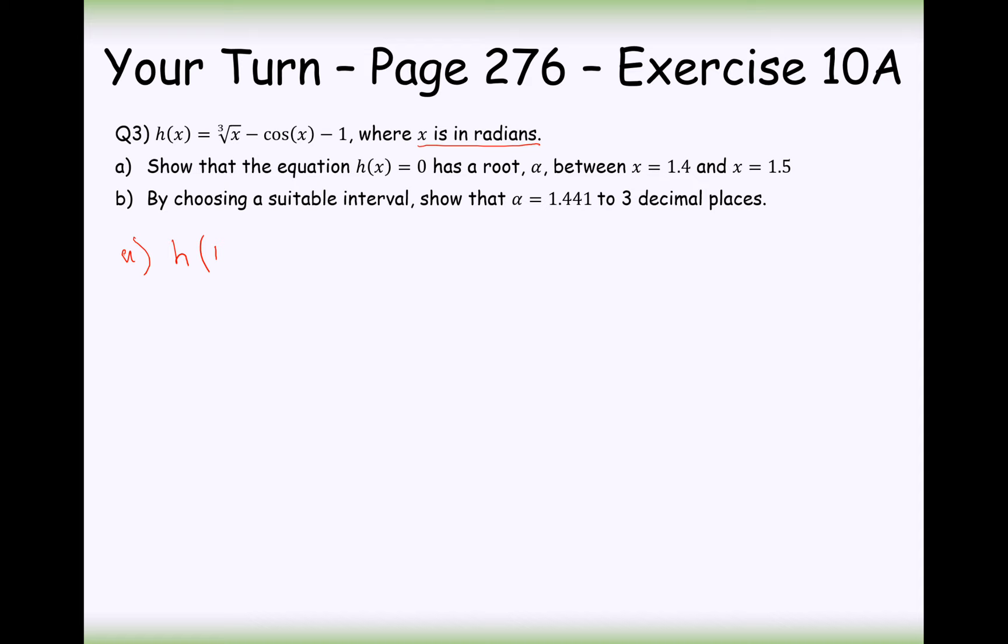So the first thing I'm going to have to do is show a sign change in between 1.4 to 1.5. So h of 1.4, minus cos, I'm just typing this all into my calculator now, minus 1, I get out an answer of minus 0.0513, rounded to three significant figures. And h of 1.5, if I now just use my arrow buttons to go ahead and change those input values, I get 0.0740 to three significant figures.